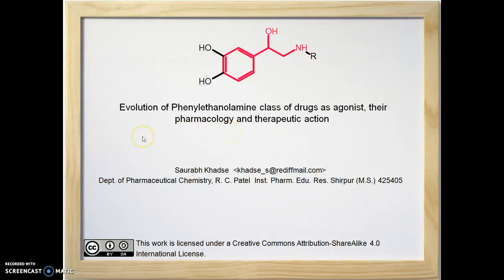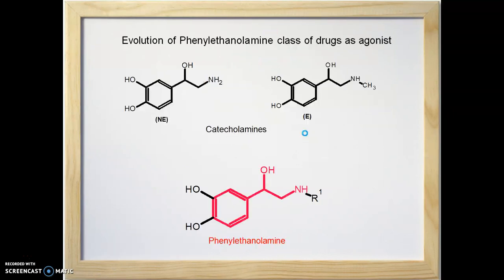Hello. In this learning dialogue, we are going to see how the phenylethanolamine class of agonists has evolved — their pharmacology and therapeutic utility. After the discovery of norepinephrine and epinephrine as prototypical compounds, the phenylethanolamine class of drugs has started to evolve and has been extensively studied.